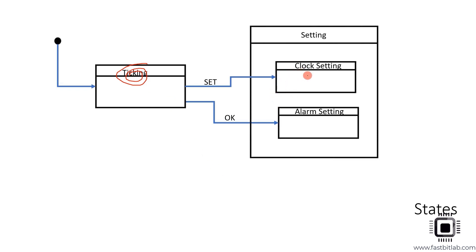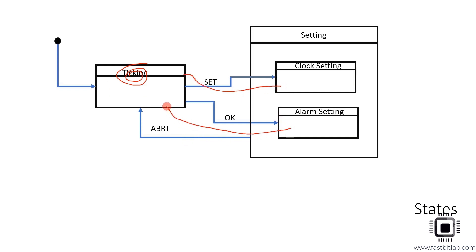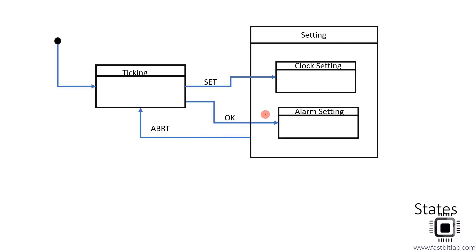When the application is in clock setting or alarm setting mode, the user can abort the setting at any time. That's why we can give one transition from setting mode to ticking mode. Instead of drawing individual abort transitions, you can draw a super state for these two states and give one common transition from the setting state to the ticking state — that's the abort.